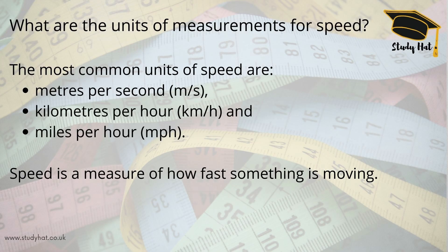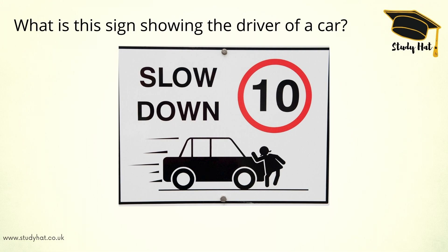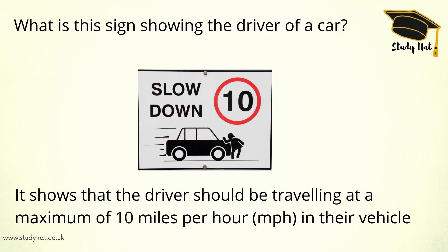Let's look at another example — measurements of speed. The most common units of speed are metres per second, kilometres per hour, and miles per hour. Speed is a measure of how fast something is moving. Looking at a real-world application: what is this road sign showing the driver of a car? This sign is showing the driver that they should be travelling at a maximum of 10 miles per hour.